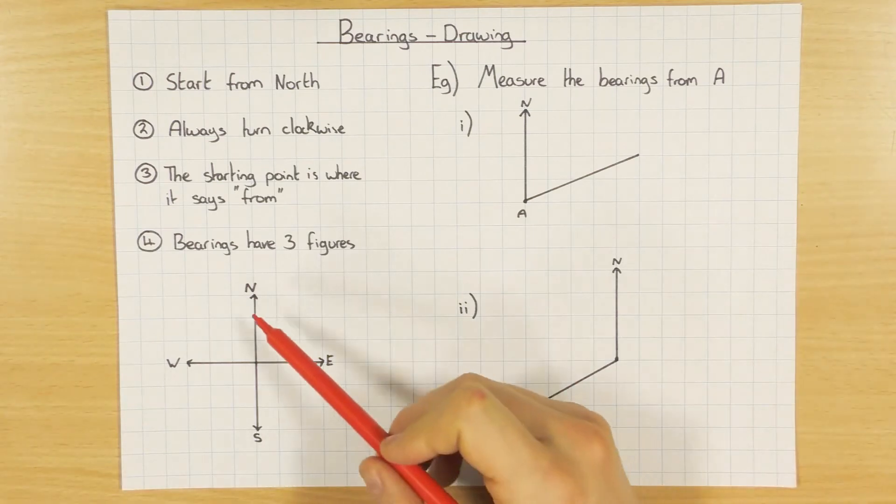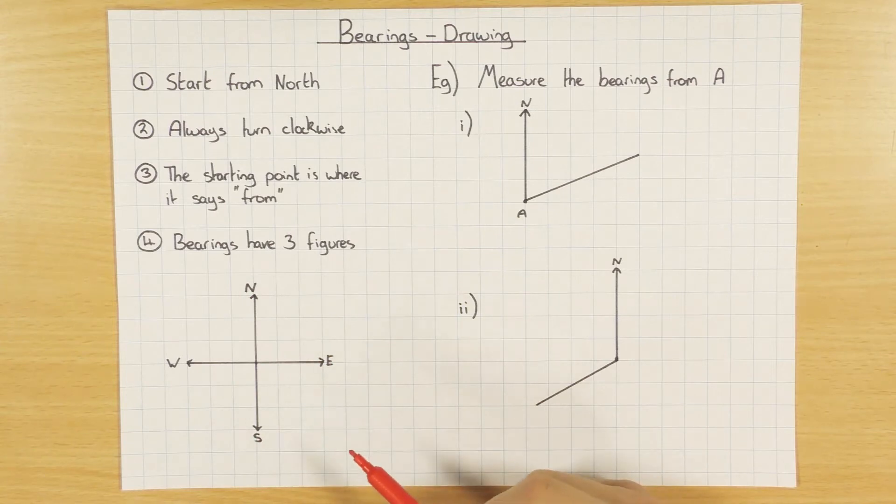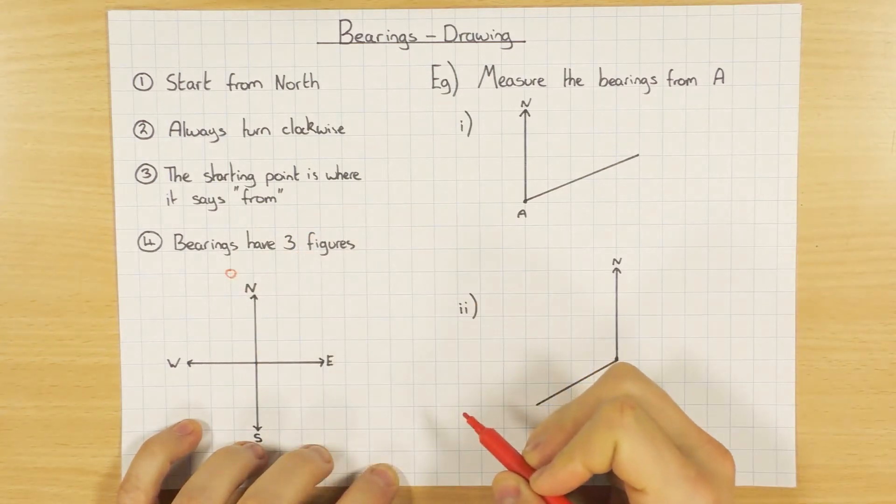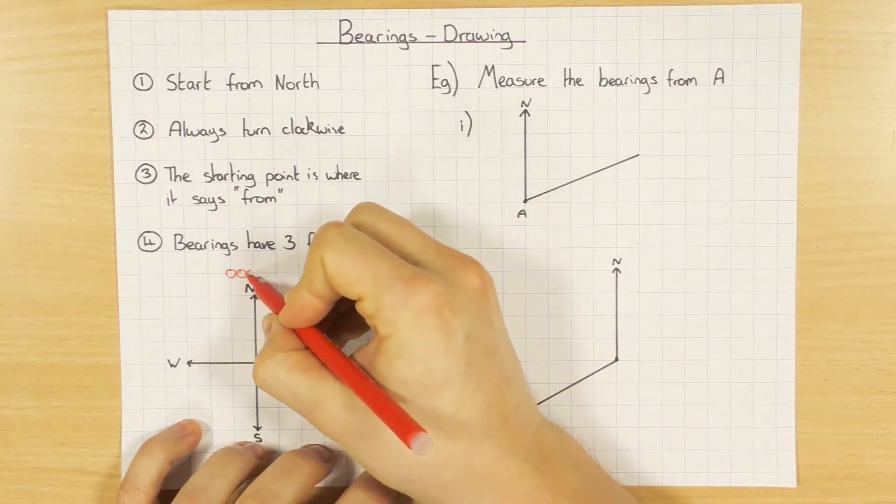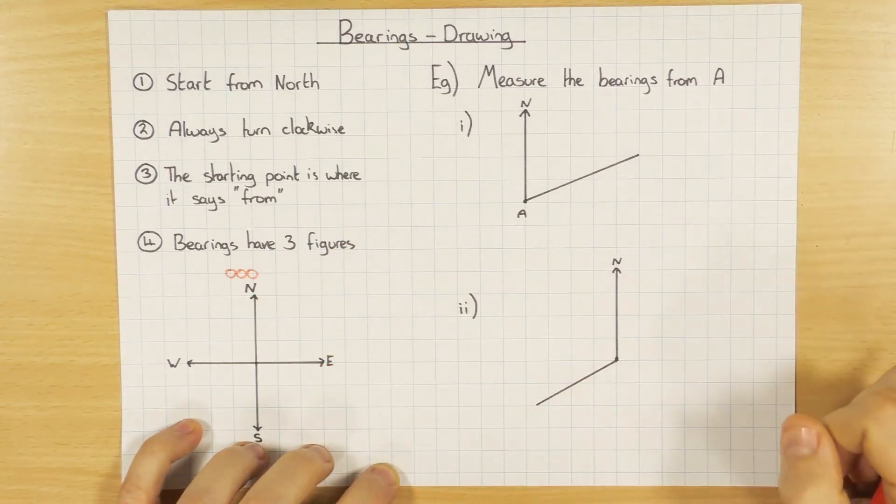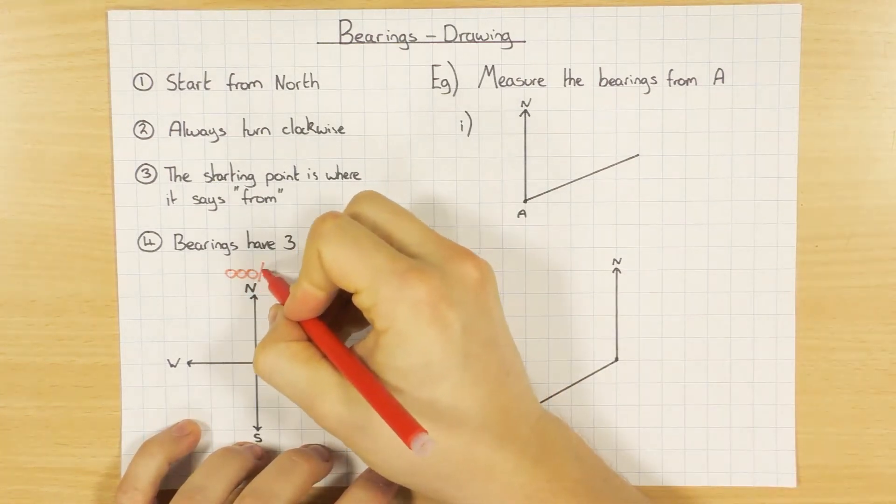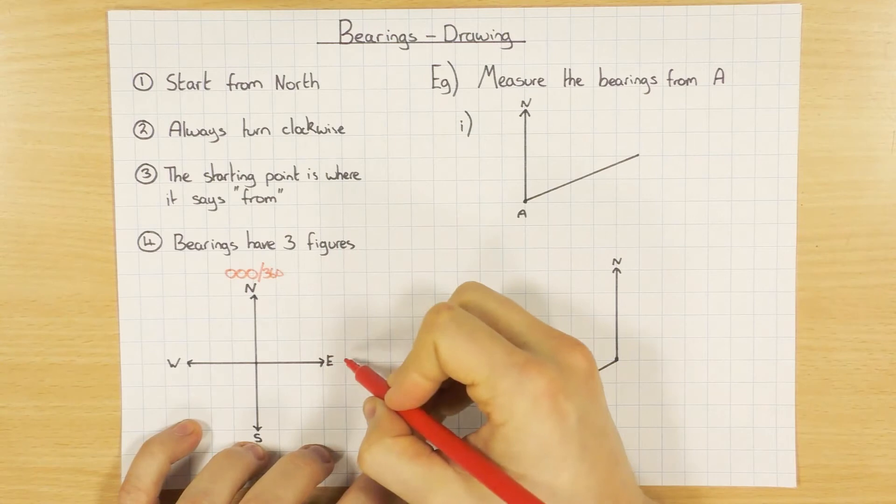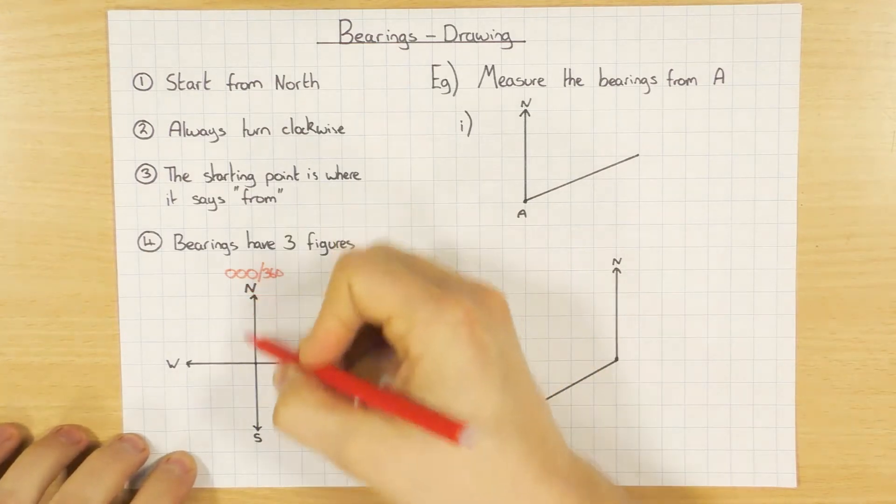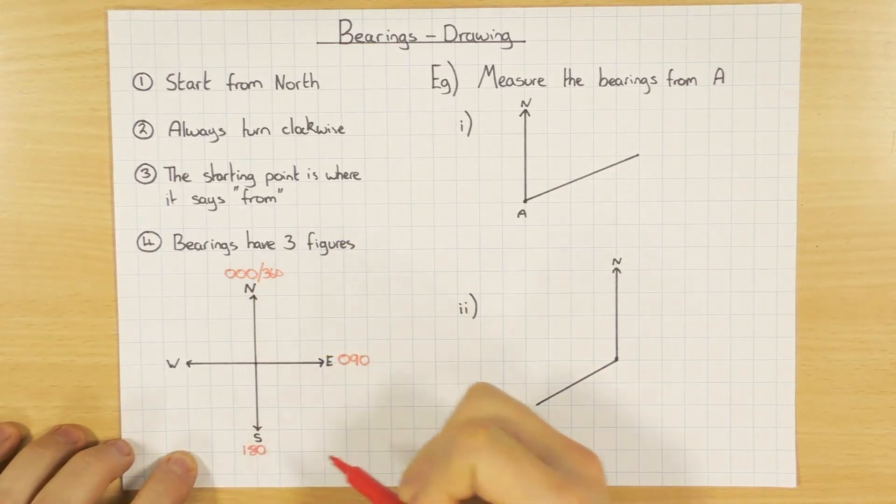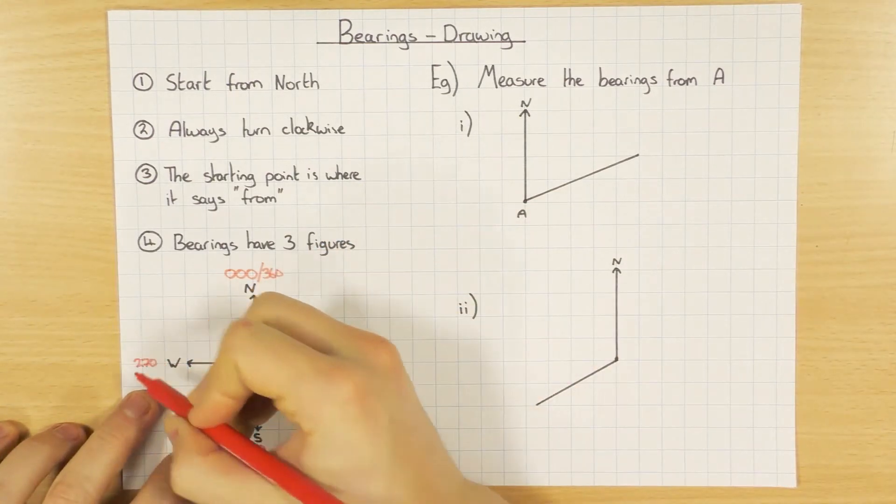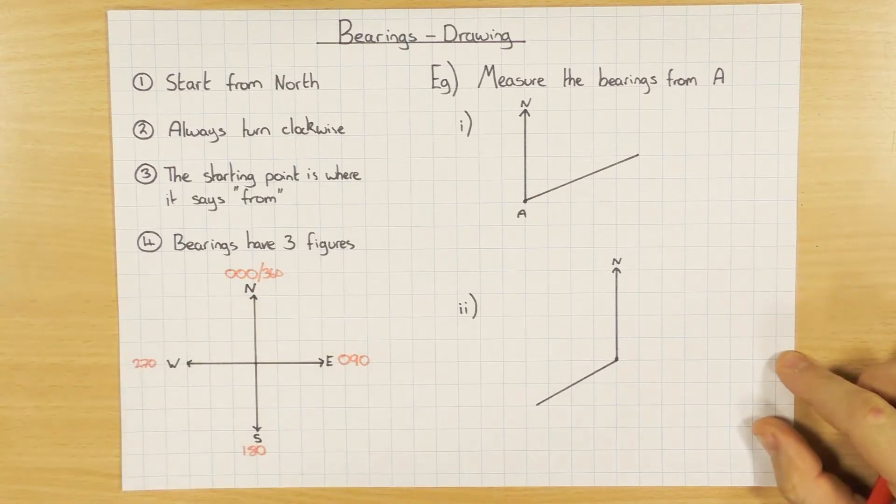So just a little quick reminder as well with bearings - it's all to do with direction. If we always start with north, we always say that north is at zero, but remember it has to have three figures. So it's 000. That would be the bearing for north. You could also say it's 360 if you go all the way around. For east it's 90 degrees, but again must be three figures, so we actually write 090. For south it's 180, and then three quarters, so west will be 270. Remember bearings is just all about direction.